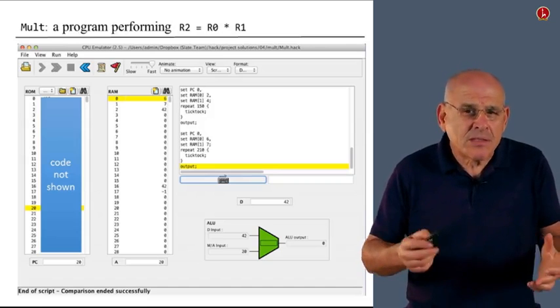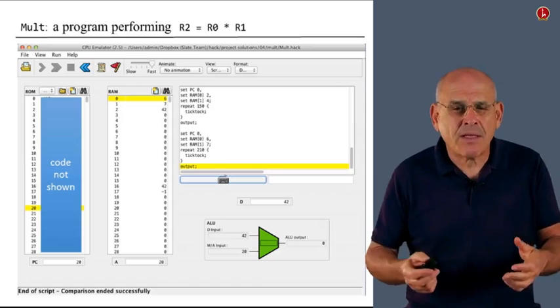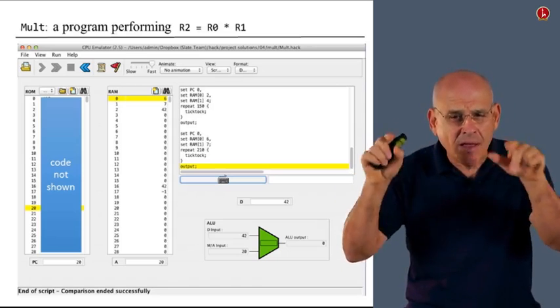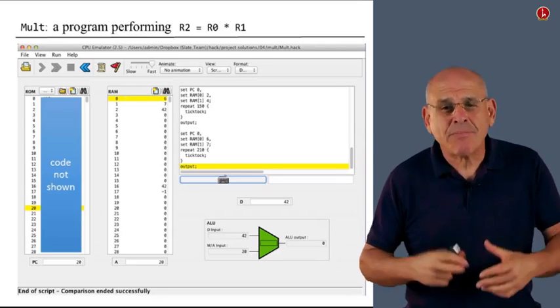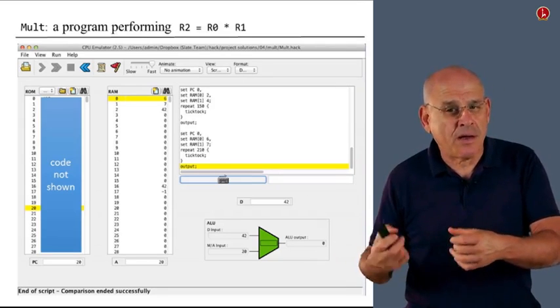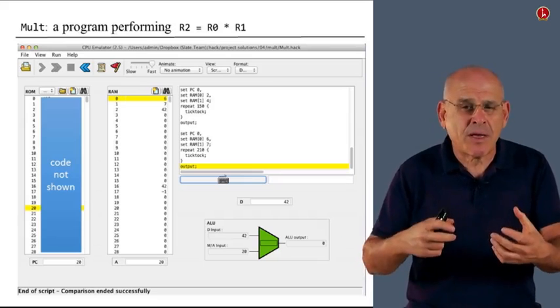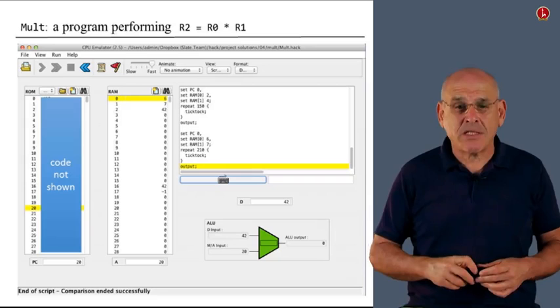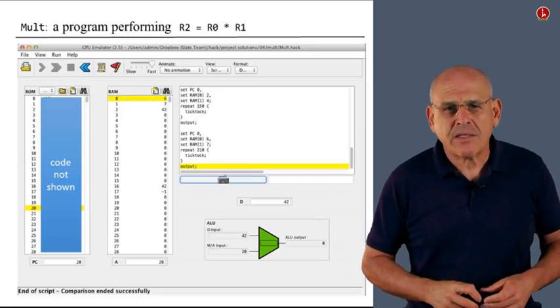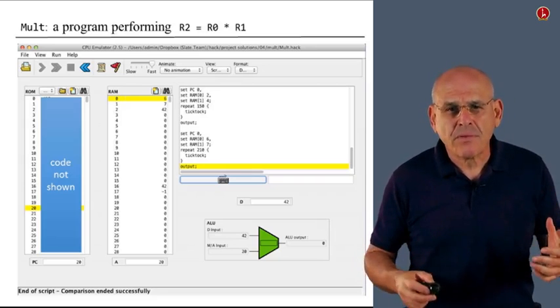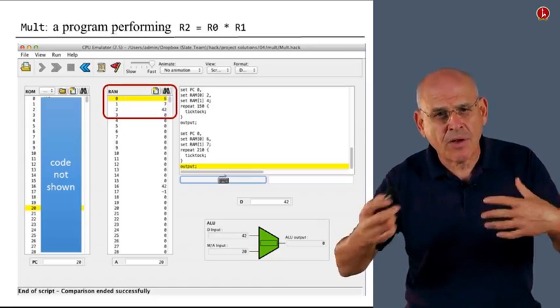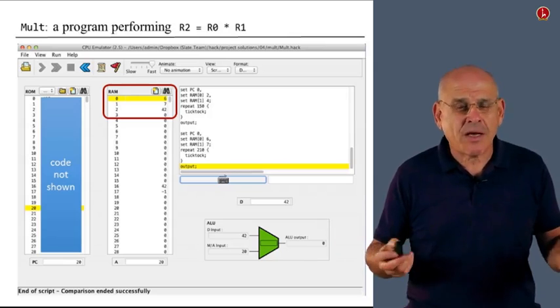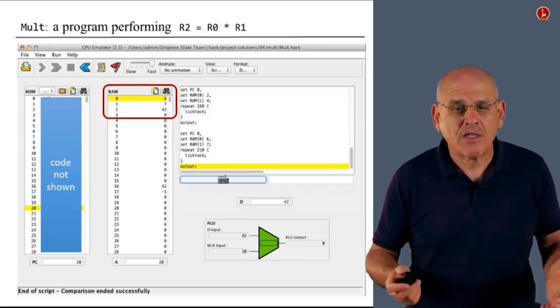This is maybe also the place to point out that in the simulator, in the CPU emulator, we use the screen as sort of a multi-purpose device. Sometimes it works as a real physical screen. Sometimes we use it as a window to display our test scripts and so on. In this area you'll see the input, the two inputs and the output of the program.